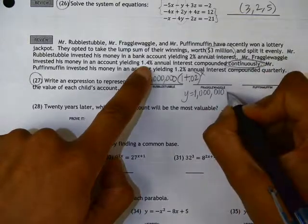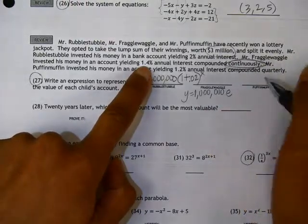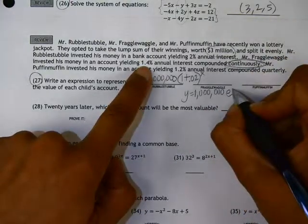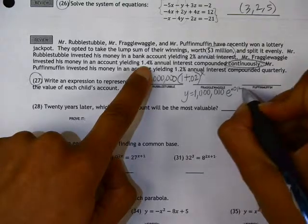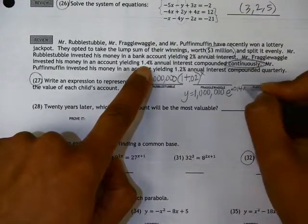So this is a key word here. The multiplier is E, and the exponent is R and T, so .014, and we could use X or T.